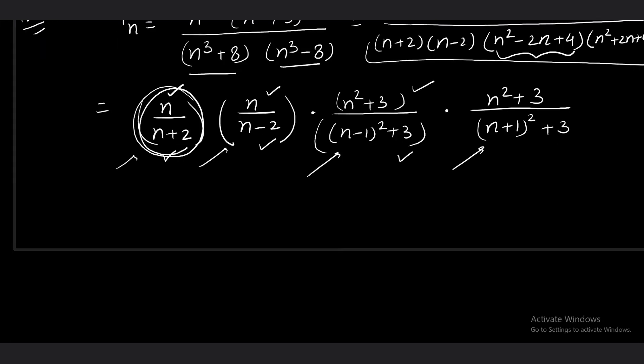Now I will start with the continued product. We need to go up to infinity. But normally what we do is start with 3 and go till capital N, then take limit n tends to infinity. So the product Tₙ gives me product from n = 3 to N of n/(n + 2).